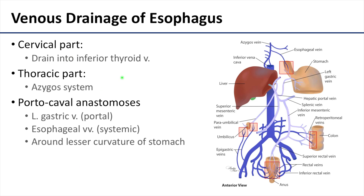Venous drainage mostly follows the arterial supply. The cervical part is going to drain into the inferior thyroid vein, and the thoracic part is going to drain into that complex azygous system right next to the vertebral column. The abdominal part of the esophagus is a really important site.